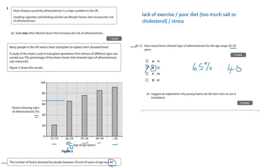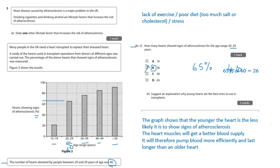Suggest an explanation why young hearts are the best ones to use. Why would you rather have a young heart? Well, according to the graph, the younger the donor was, the less chance there will be that there will be signs of atherosclerosis. So, therefore, the graph shows that the younger the heart is, the less likely it is to show signs of atherosclerosis. So, the heart muscles will get a better blood supply. It will, therefore, pump blood more efficiently, and it will last longer. A younger heart will last longer if there's less chance of it having blocked arteries.